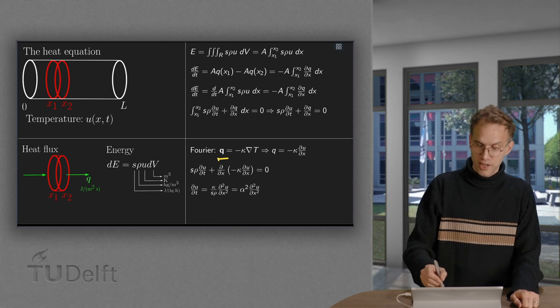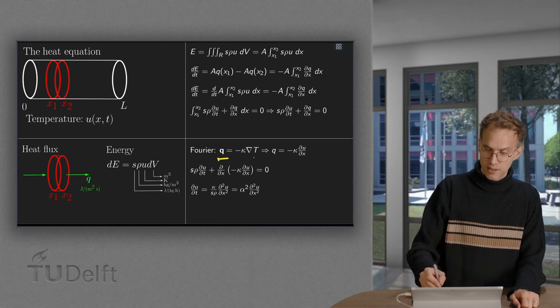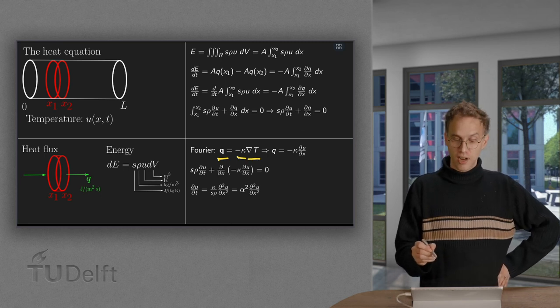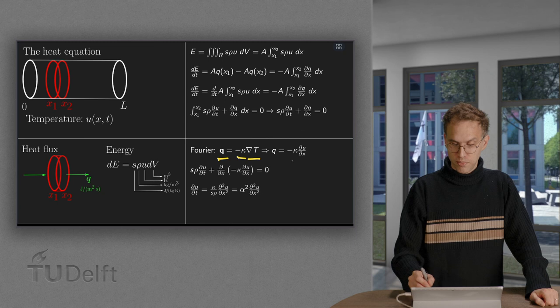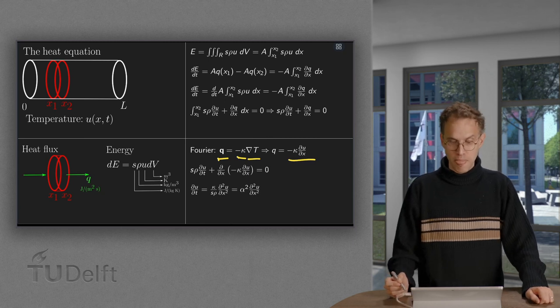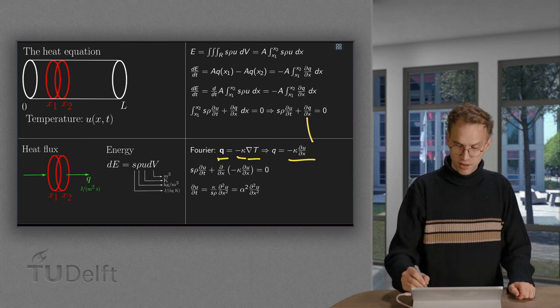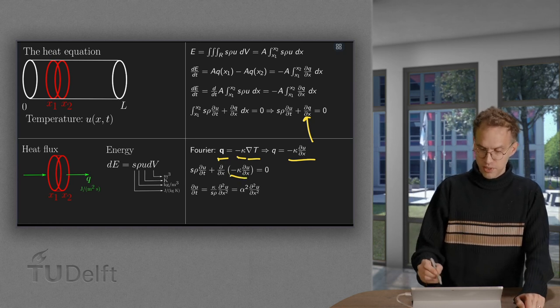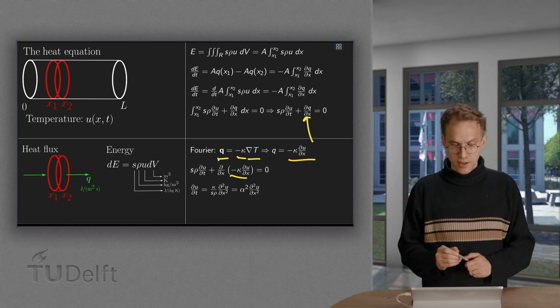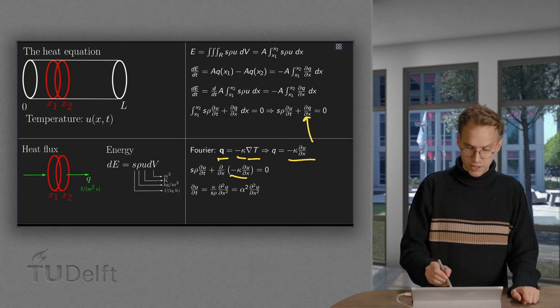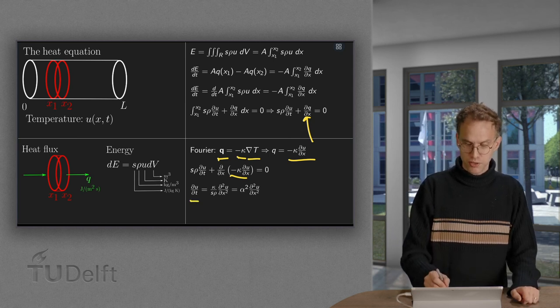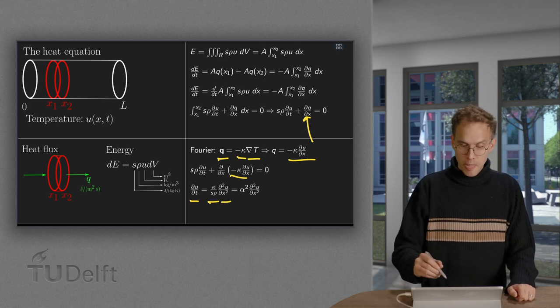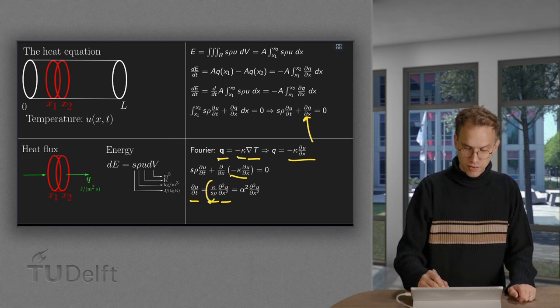So, Q is some constant kappa times minus the gradient of the temperature. So, in our case, that becomes Q equals minus kappa dU dx. So, if we plug that in over here, we get minus kappa dU dx over there. And then we can solve for dU dT. dU dT is a bunch of constants times the second derivative of U with respect to X.